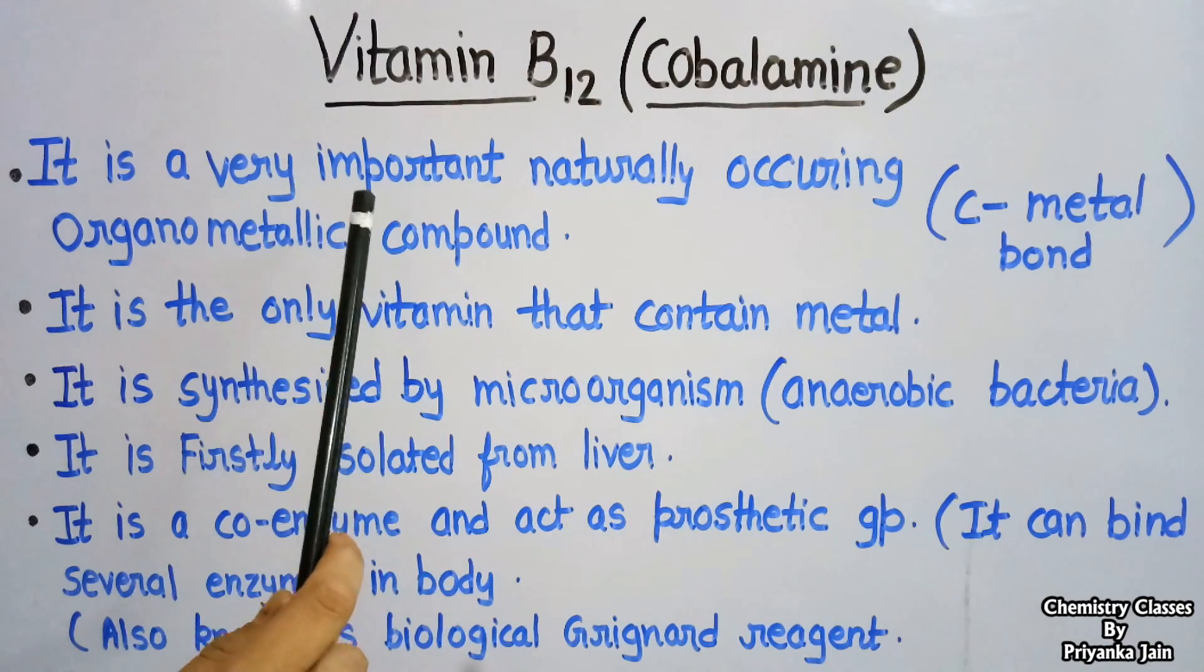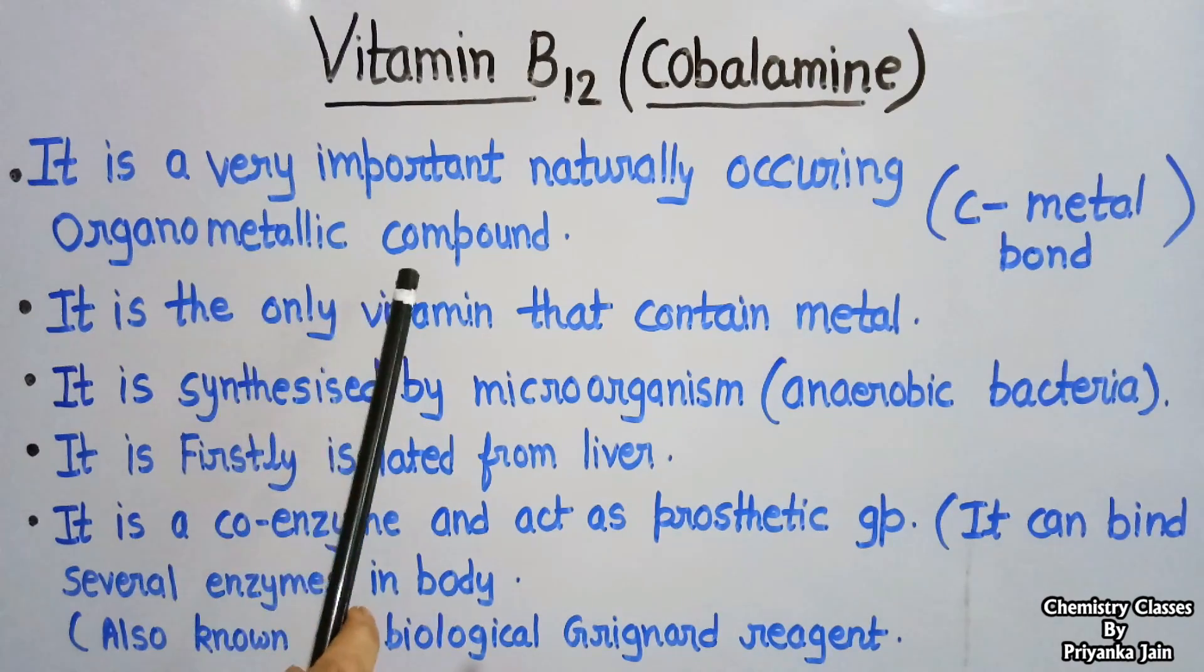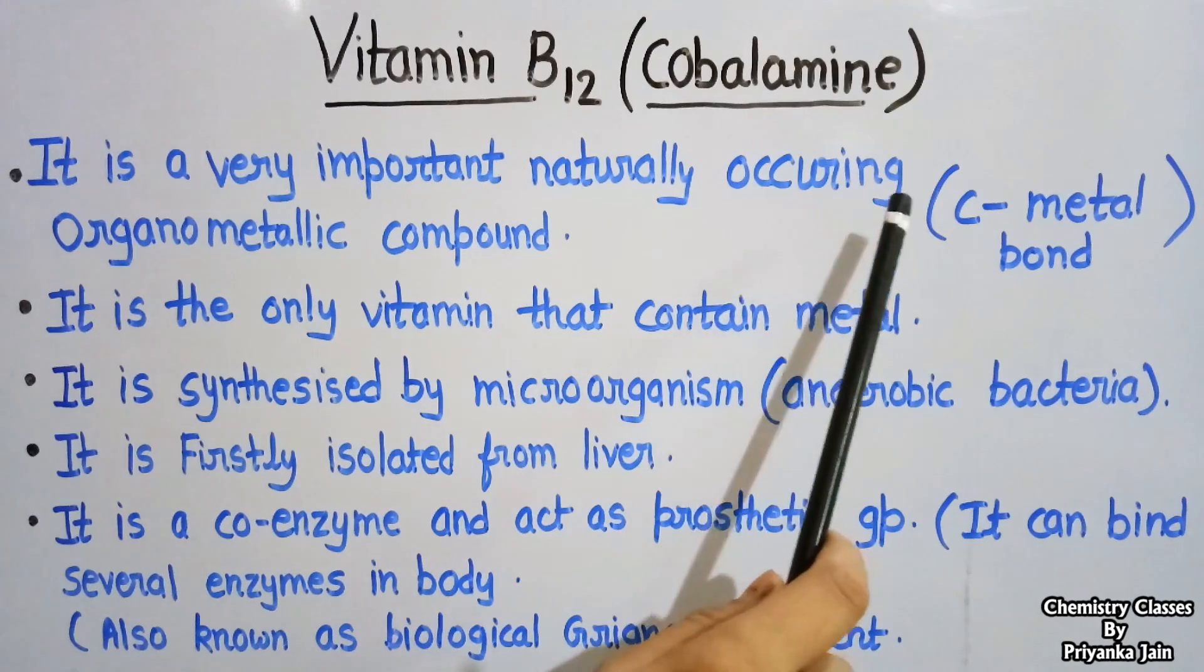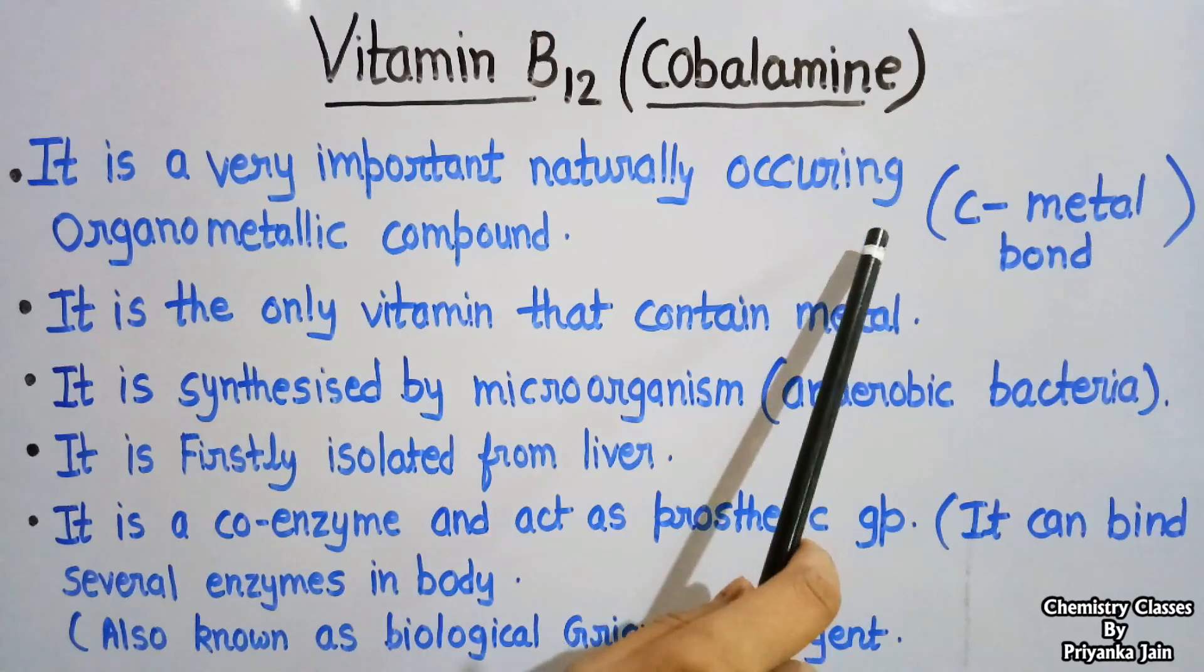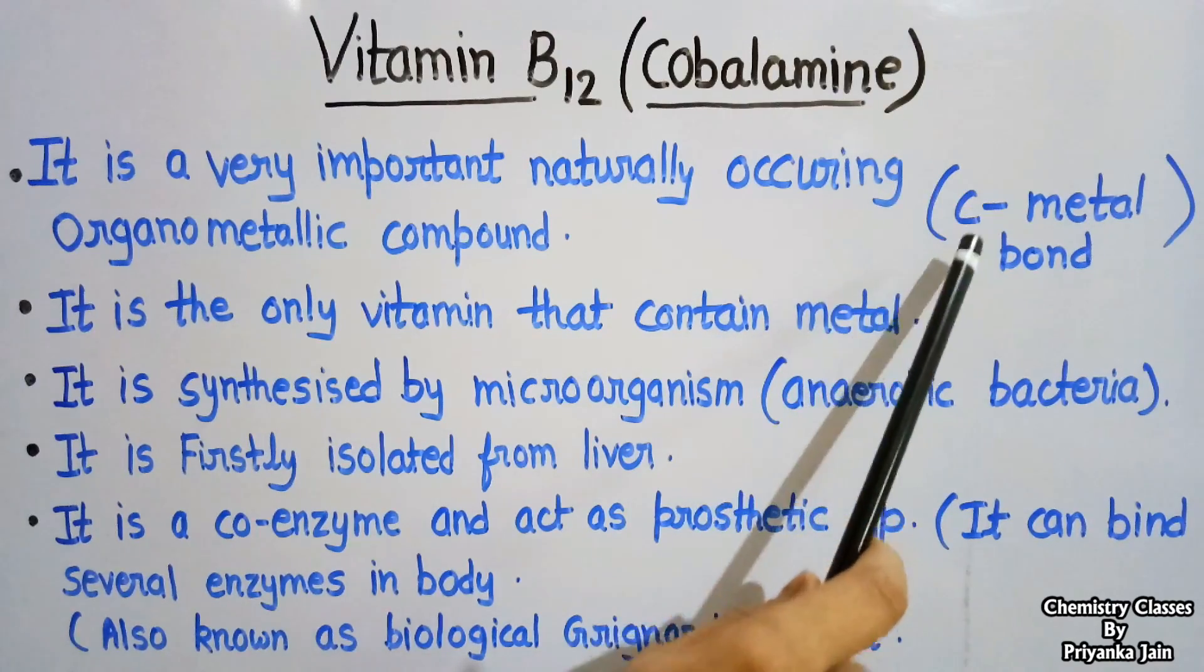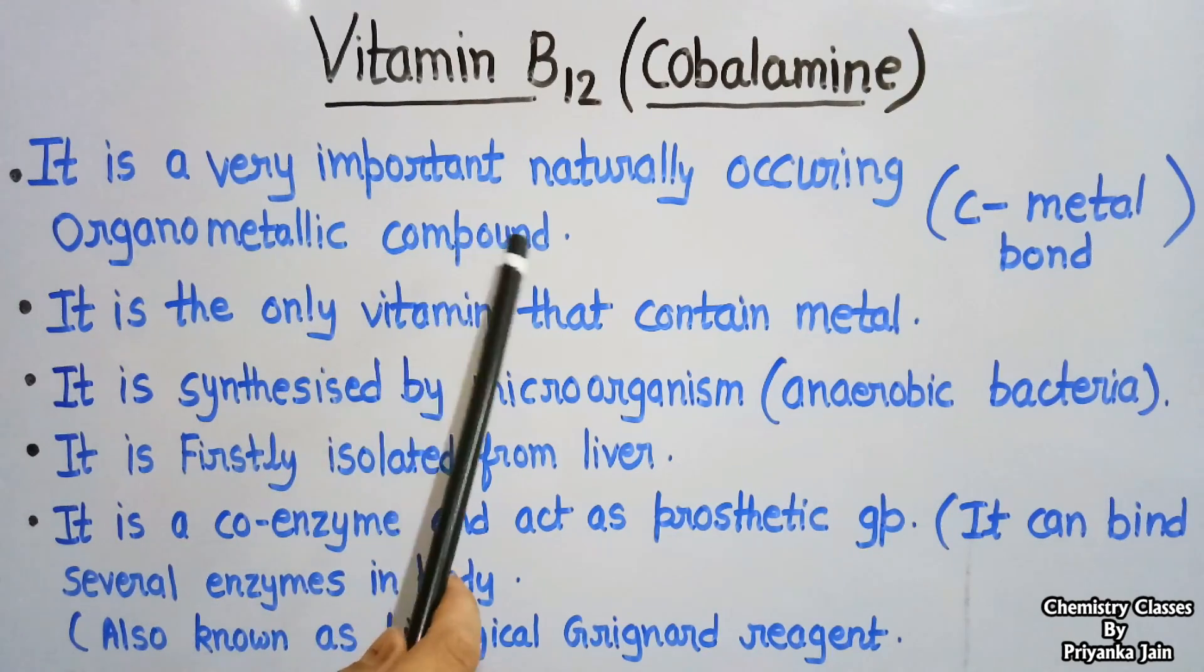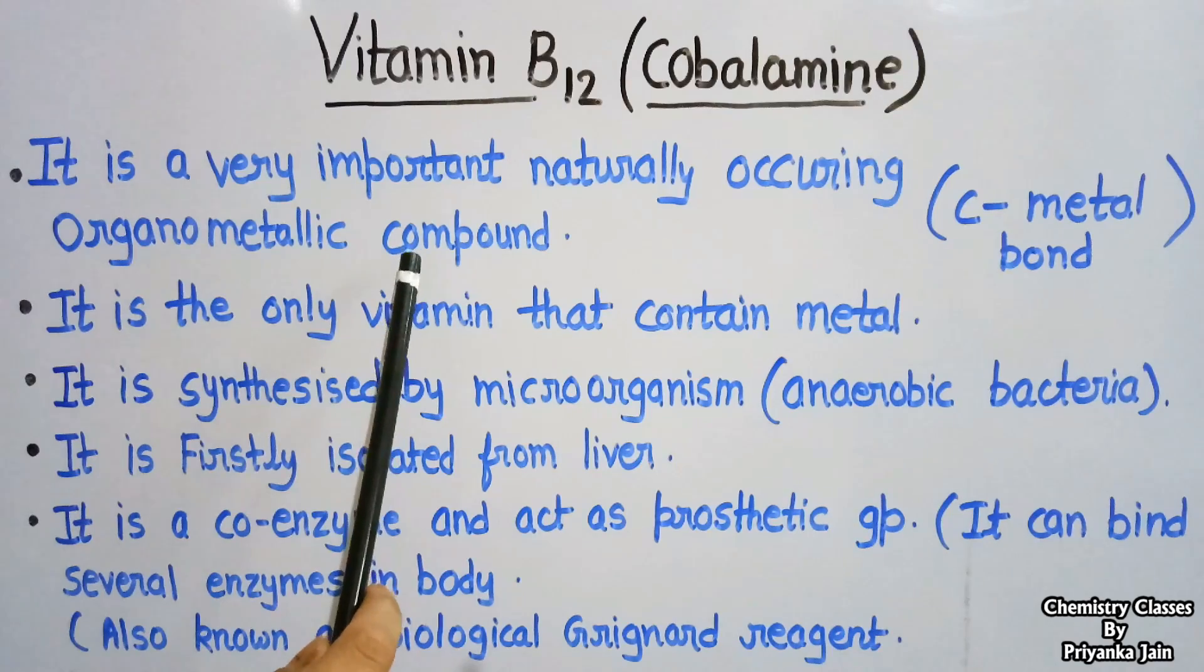It is a very important naturally occurring organometallic compound. What are organometallic compounds? The compounds that possess a direct carbon to metal bond. Any compound which has a direct carbon to metal bond will be called an organometallic compound, and vitamin B12 is a good example of such compounds.